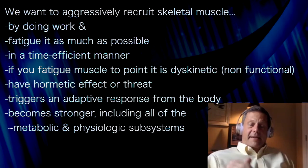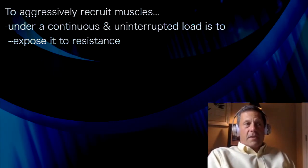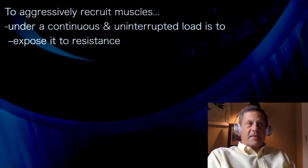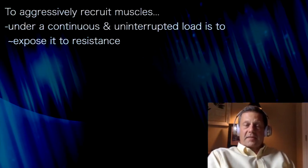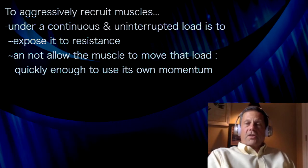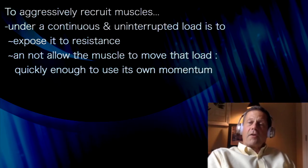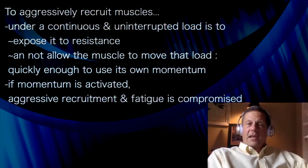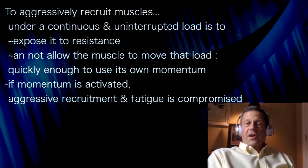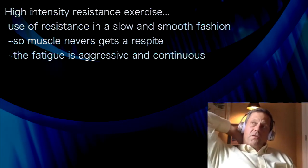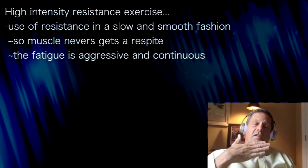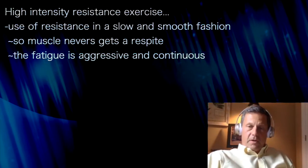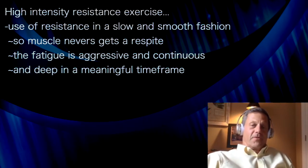It turns out that the way to most aggressively recruit muscle is to ensure it's under a continuous and uninterrupted load. The way to achieve the most continuous and uninterrupted load on muscle is to expose it to resistance and not allow the musculature to move that resistance quickly enough that the resistance gets moving under its own momentum. Because if momentum is activated, the resistance is taken off the muscle, the muscle gets arrested, and the aggressive recruitment and fatigue in that muscle is compromised. So high intensity resistance exercise uses resistance that is moved in a slow and smooth fashion so that the muscle is never arrested — the fatigue is aggressive, continuous, and deep in a meaningful time frame. That's what the whole approach is about.